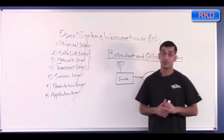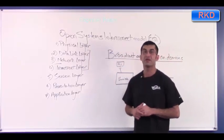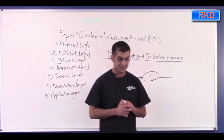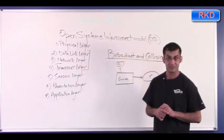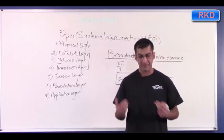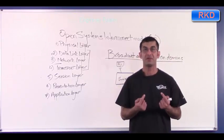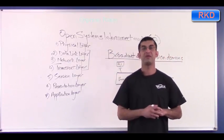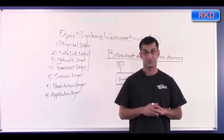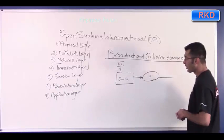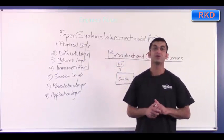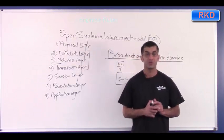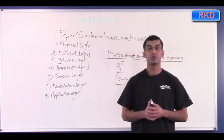Collision domains are areas of the network where, if two devices transmit at the same time while running half-duplex Ethernet, the frames those devices send can collide. So a collision domain is an area of the network where collisions can occur. Each port on a router and each port on a switch is its own collision domain.